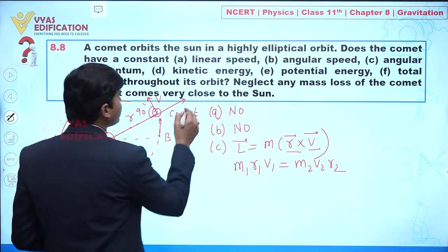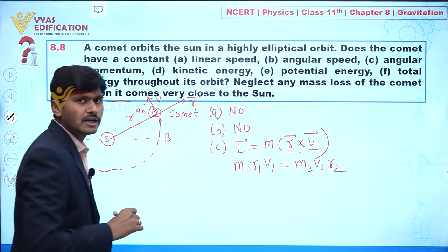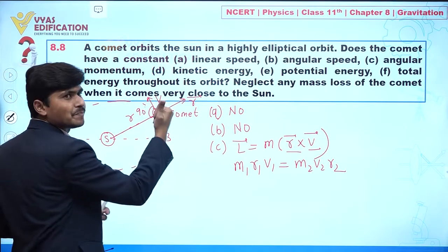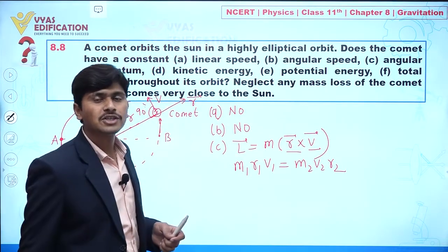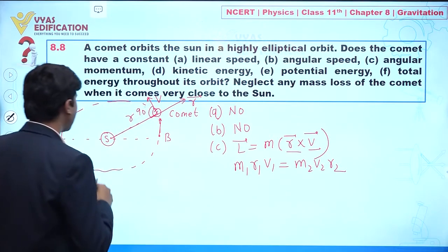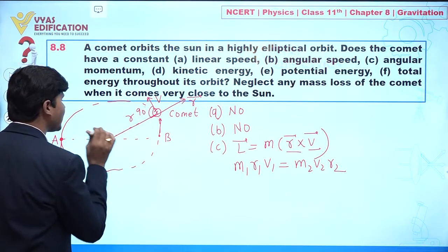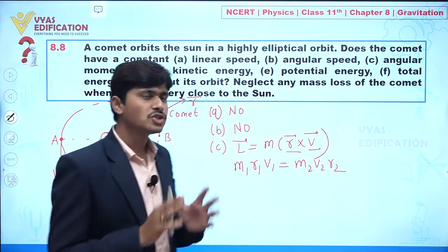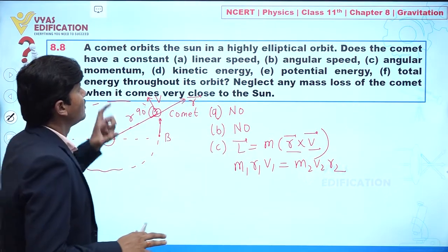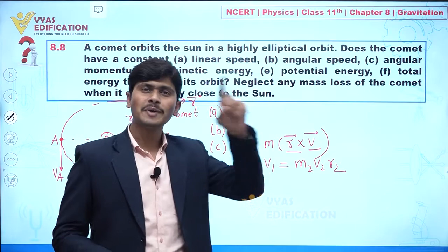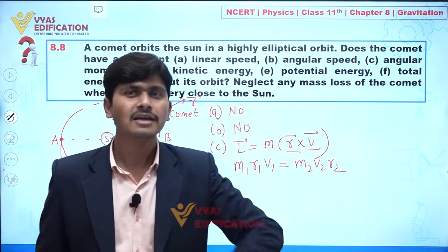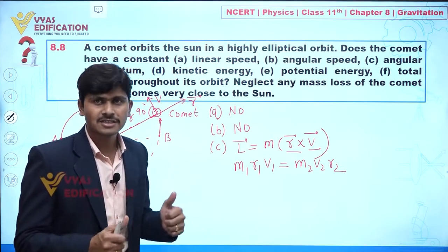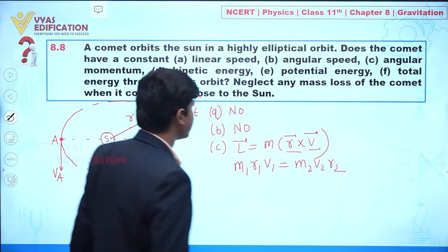The direction of angular momentum is given by r × v. If we curl our fingers from r to v, it gives the direction of angular momentum, which is perpendicular to the screen. So whenever a comet revolves around the sun in an elliptical orbit, angular momentum is conserved — both in magnitude and direction.